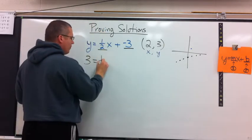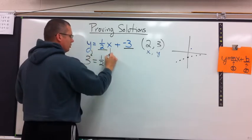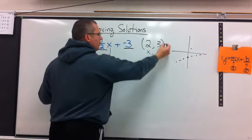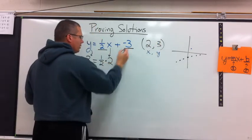Equals. I still have my slope 1 half. Times x. What number can I put in for x? Look at the information given. x is 2. Plus negative 3.